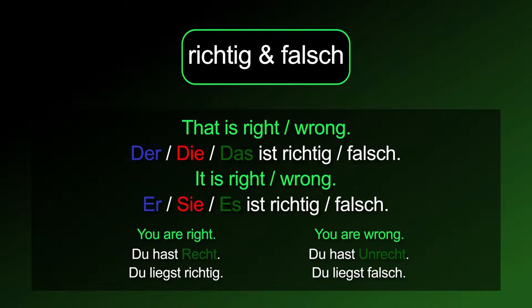In German, when you want to say that somebody is right or wrong, we usually do it with the noun recht or unrecht. Another possibility is to use the verb richtig liegen. Du hast recht. Du liegst richtig. Du hast unrecht. Du liegst falsch.